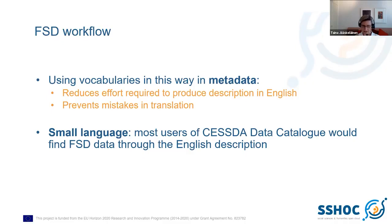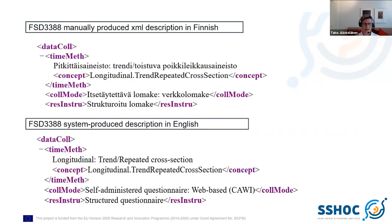The benefits of this are less work, fewer mistakes, and a wider audience — we really need to have dataset descriptions in English as well. This screenshot shows the XML description produced in Finnish — I took a screenshot of three controlled vocabulary elements. The second shows what the translator sees when translating into XML; they don't actually have to do anything because the code behind has already provided the English versions.